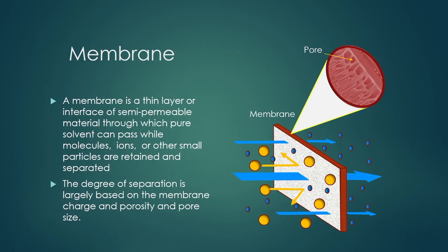Coming to the membrane component — one of the most important components in the filtration process — without which no separation is possible. A membrane is basically a thin layer or interface of semipermeable material through which some materials pass while other materials are retained on one side. It is a semipermeable material through which pure solvent can pass while molecules, ions, or other small particles are retained and separated.